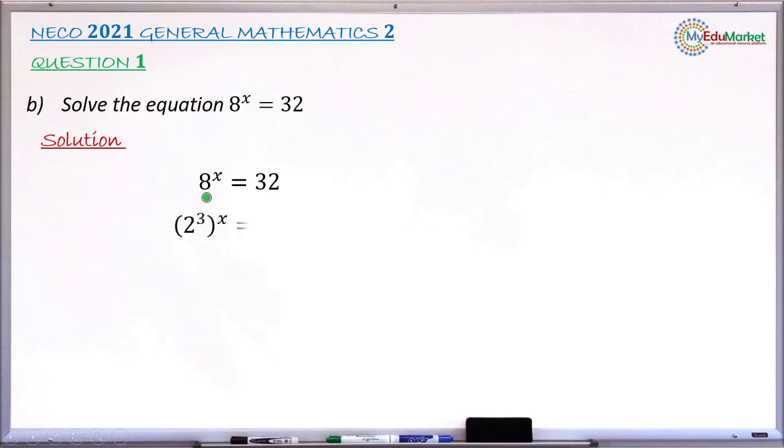So 8 is now equal to 2 raised to the power of 3. Instead of 8 raised to the power of x, we now have 2 raised to the power of 3 in the bracket, and that bracket raised to the power of x. Similarly, 32 changed to index form gives 2 raised to the power of 5.